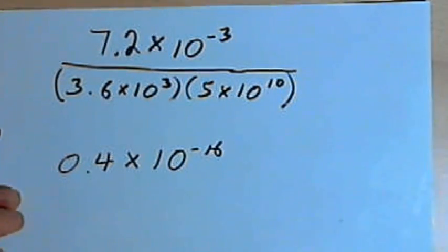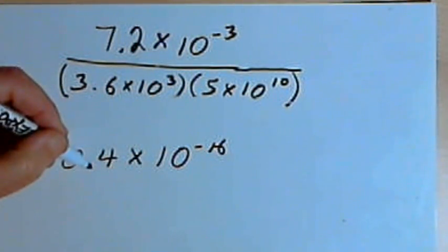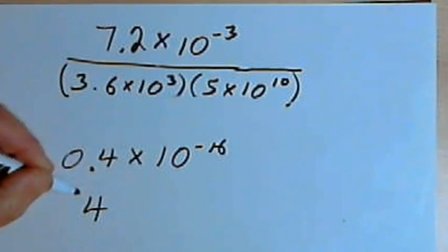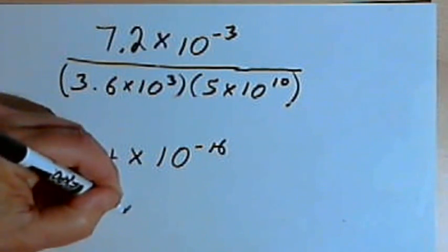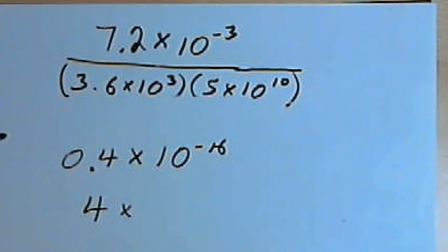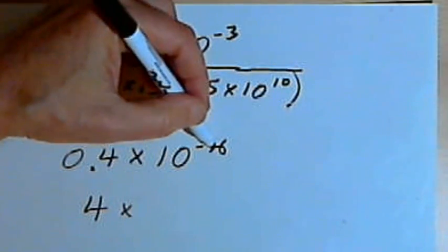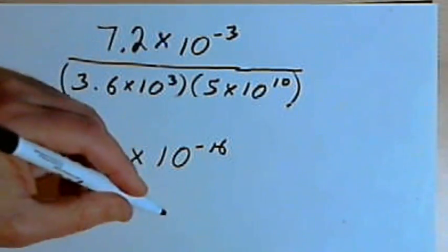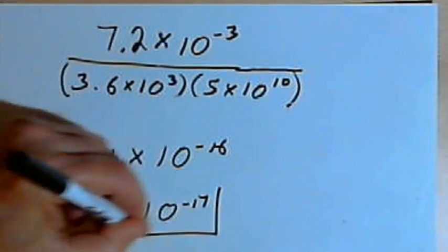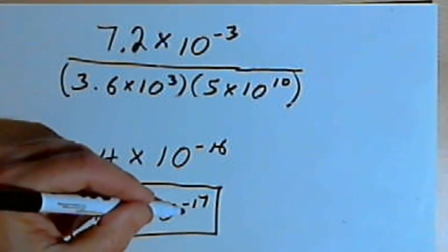So I'm going to have 10 to the negative 16th. Now, as with the previous problem, I can't leave it in this form because this is not scientific notation. I've got to take that 0.4, move the decimal point to the right, so I'm just starting with the digit 4, and now I've got to adjust the exponent. That negative 16 has to become 1 smaller because I want a smaller power of 10. So negative 16 minus 1 is negative 17, which means I'm going to have 10 to the negative 17th. So my answer is 4 times 10 to the negative 17th.